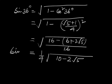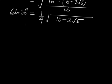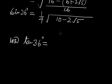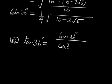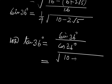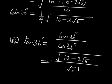Thus, sin 36° = (1/4)√(10 − 2√5). Now tan 36° = sin 36° / cos 36° = √(10 − 2√5) / (√5 + 1).